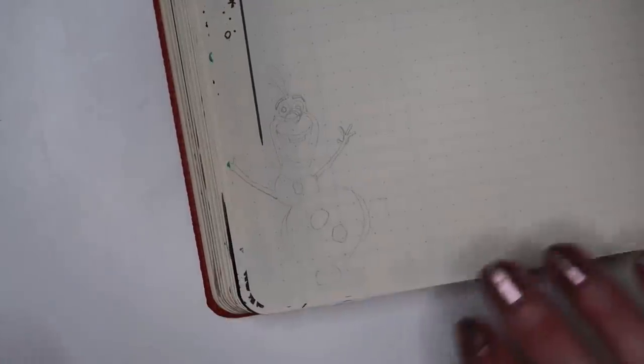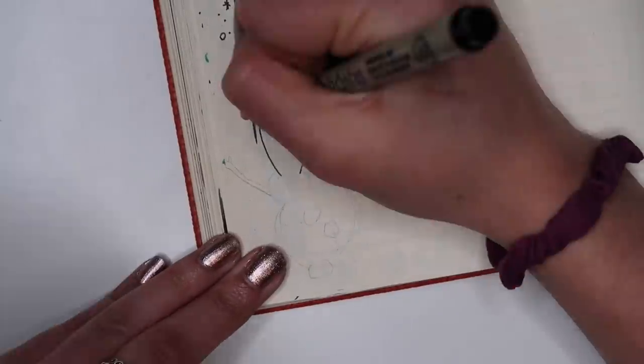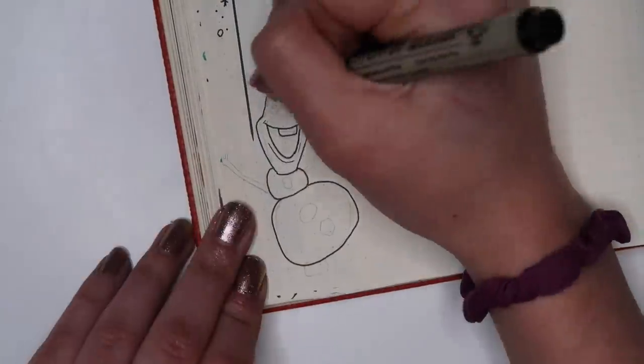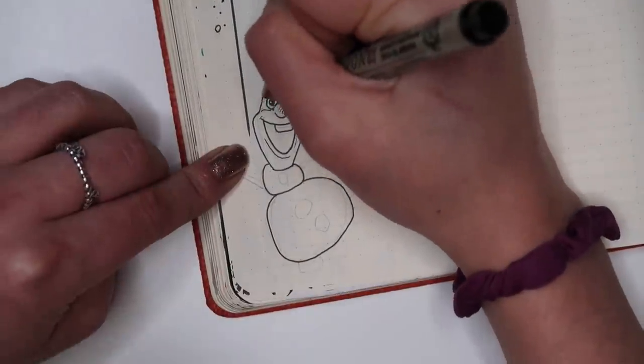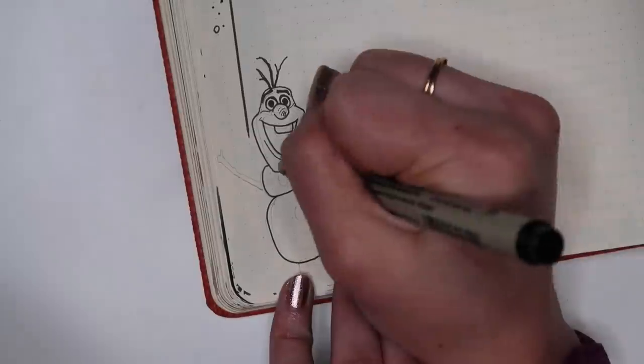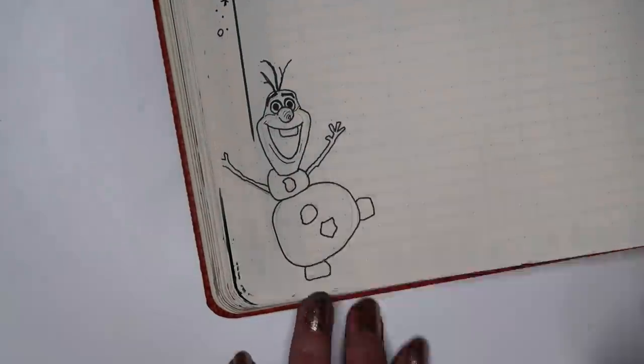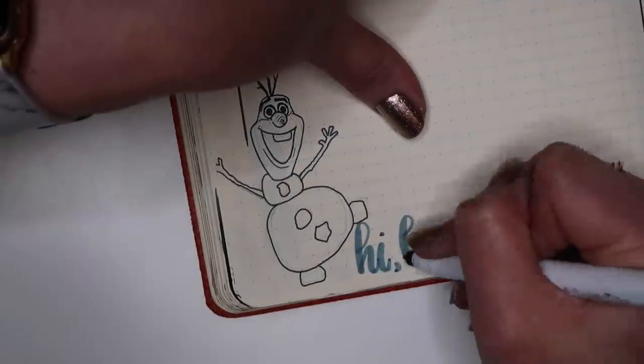And now for the doodle that I kind of hyped you guys up on, and it's Olaf. So I did just find a favorite picture of him and tried to copy it as best as I could into my bullet journal and I just traced him right here and then I went ahead and colored him in.